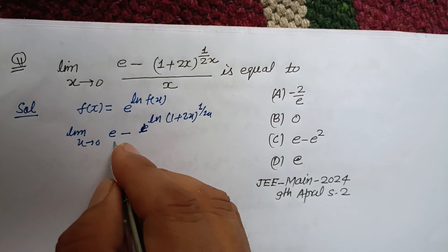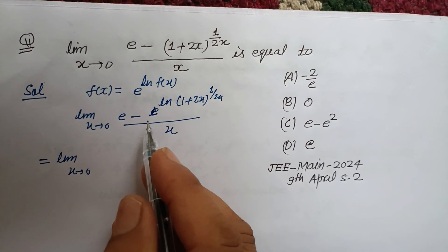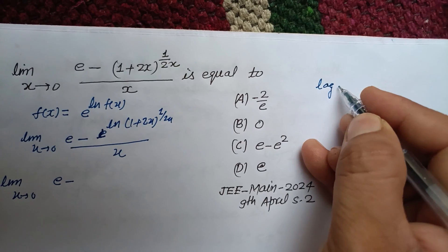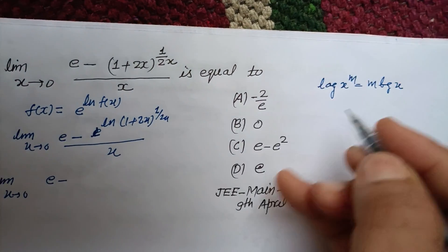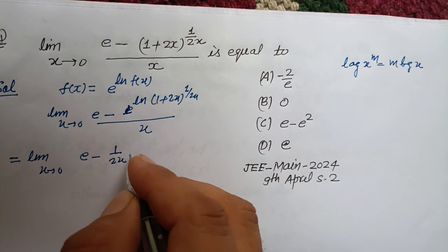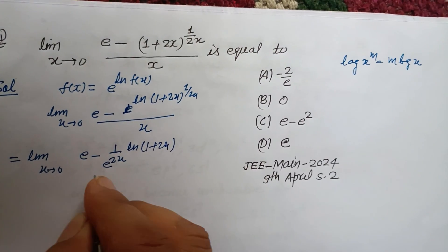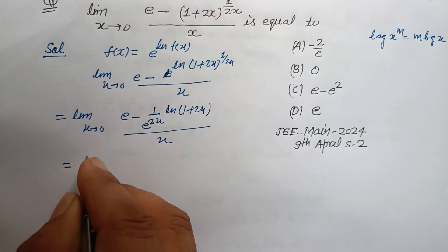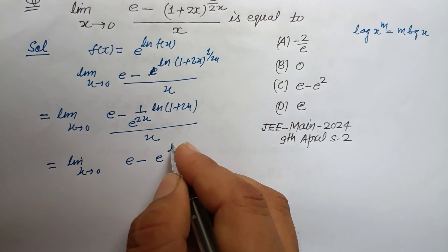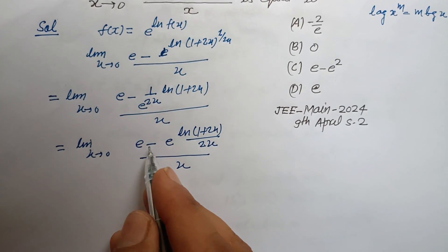Using the log formula log(x^m) = m·log(x), this becomes: limit as x tends to 0 of e raised to (1/2x)·ln(1+2x), all divided by x. We then rewrite it as e^(ln(1+2x)/(2x)) divided by x.